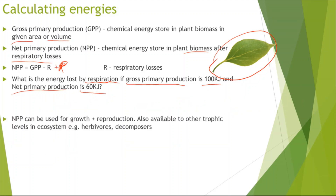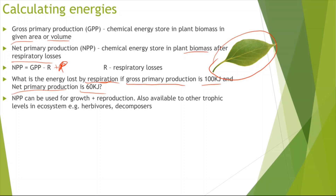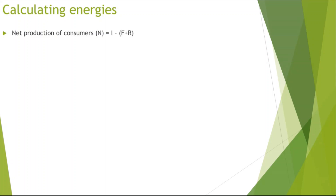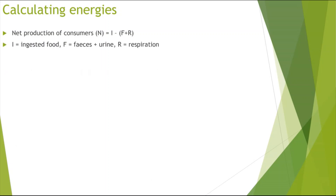After respiratory losses, the energy remaining — the NPP — can be used for growth and reproduction. It is also available to other trophic levels in the ecosystem, such as herbivores and decomposers. Now looking at the net production of consumers: this is represented by N, and the equation is N = I − (F + R), where I is ingested food energy, F is feces and urine, and R is respiration.